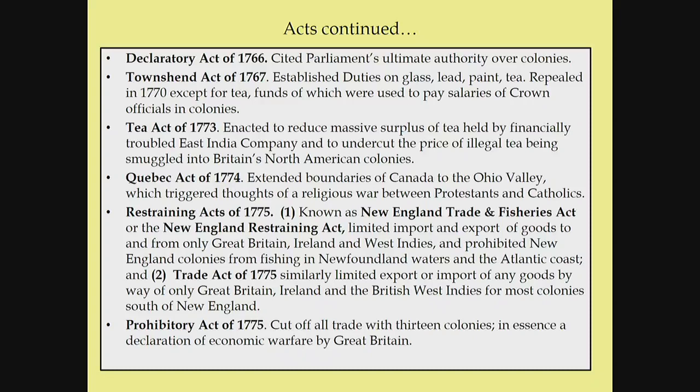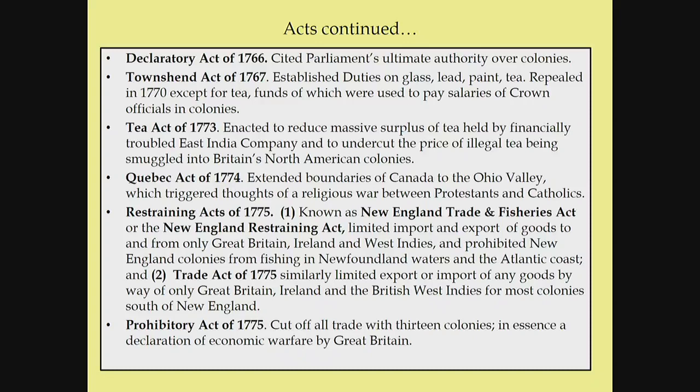In response to the Boston Tea Party — and there were tea parties in other areas, including here in Virginia — the British Parliament enacted the Coercive Acts, or what we call the Intolerable Acts. One major action was shutting down the port of Boston until the tea was paid for. Probably the most brutal was the Massachusetts Government Act, which revoked the Massachusetts Charter of 1691, limiting self-government and saying only someone appointed by the king or royal governor would be a legitimate representative. They also began quartering troops in areas akin to public homes.